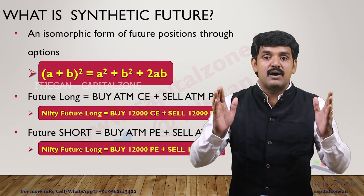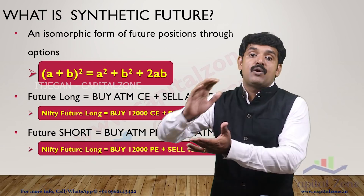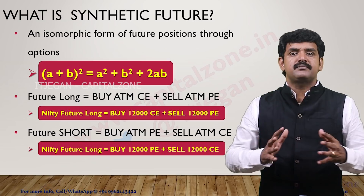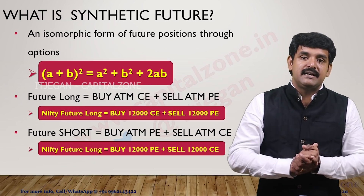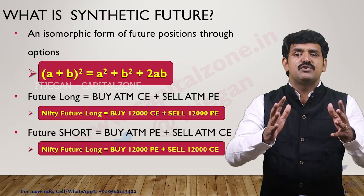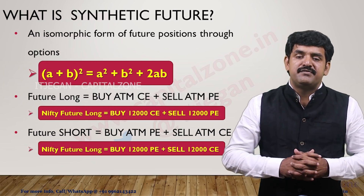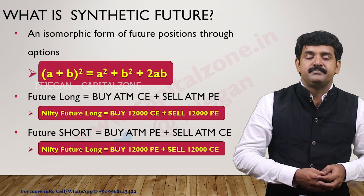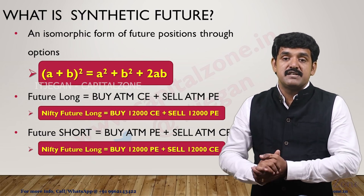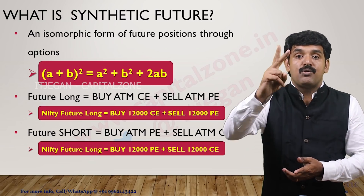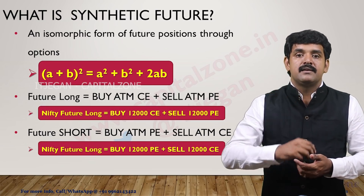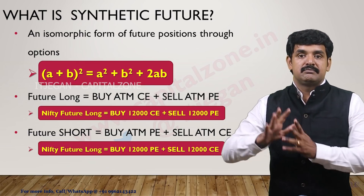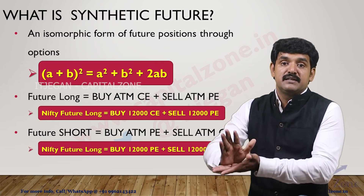Very simple — you are going long in the future market through options but not using the future contract at all. Let's assume Nifty is at 12,000. If you want to go long in Nifty Futures, you buy the Nifty contract at 12,000. Whereas in Synthetic Futures, you need to trade two contracts: you need to buy the 12,000 call and sell the 12,000 put. This is called Synthetic Future long.